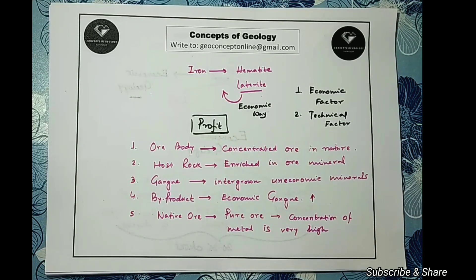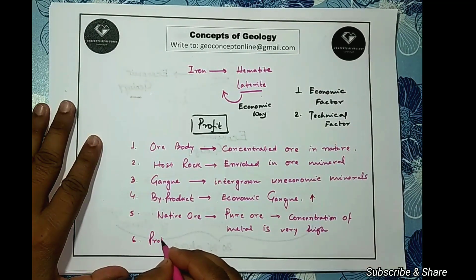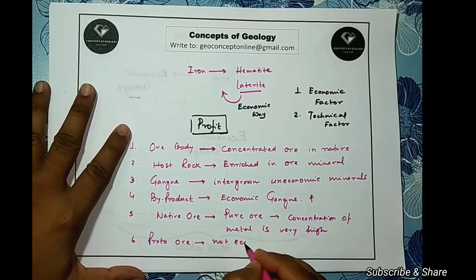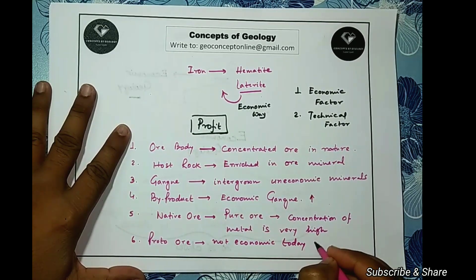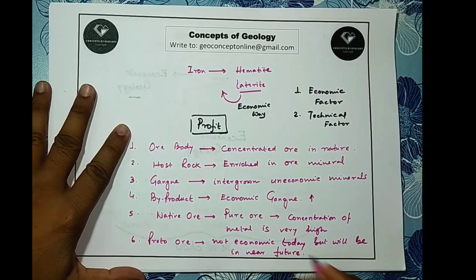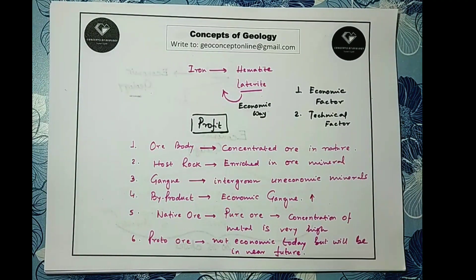Finally, the proto-ore. A proto-ore is a concentration of ore minerals in nature which is not economic under the current techno-economic and social conditions of the nation, but from our geological knowledge we know that natural agencies — such as water, wind, and sunlight — will make it economic in the near future. So proto-ore is not economic today but will be in the near future. For example, a hill made of felsic rock in a humid climate undergoing continuous weathering and leaching may form a bauxite deposit in the future — that hill or felsic rock is treated as a proto-ore.